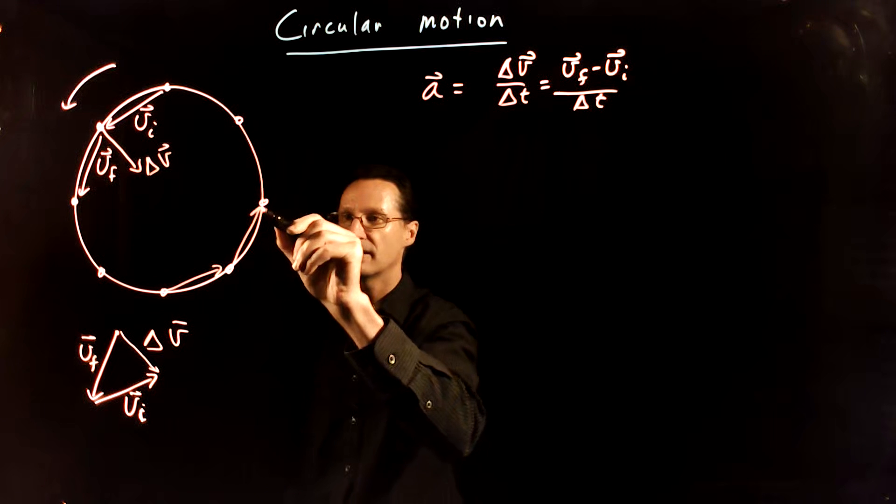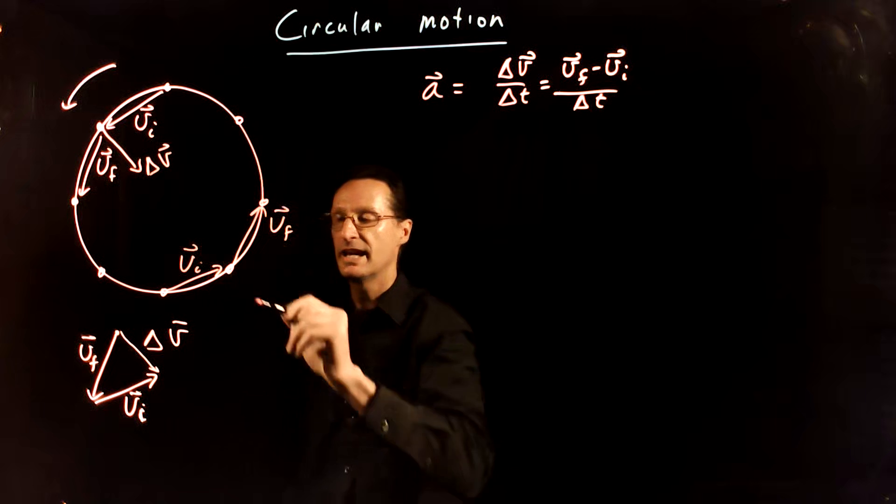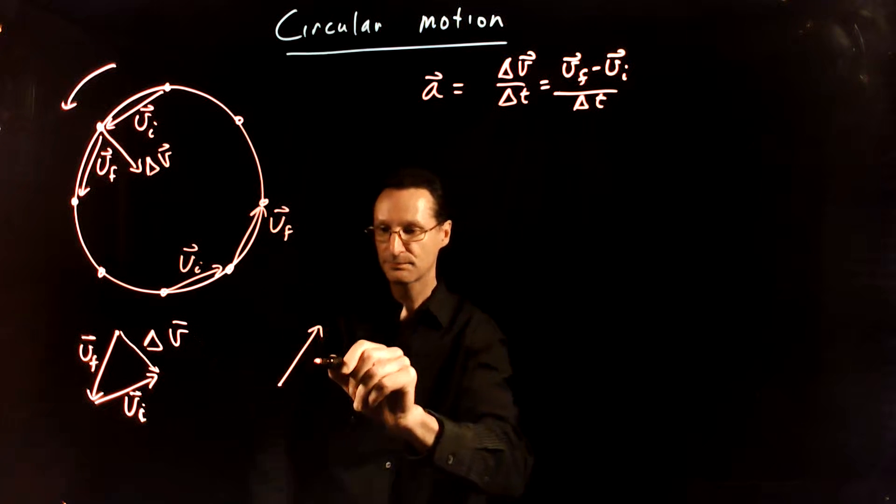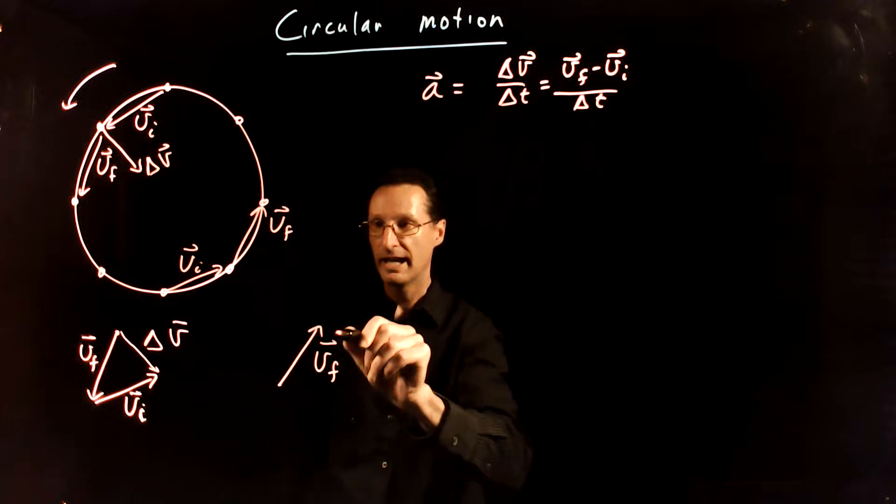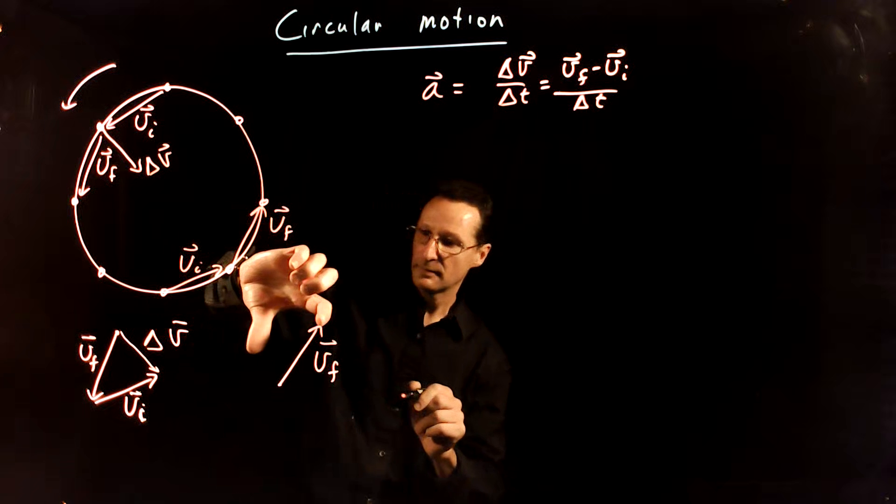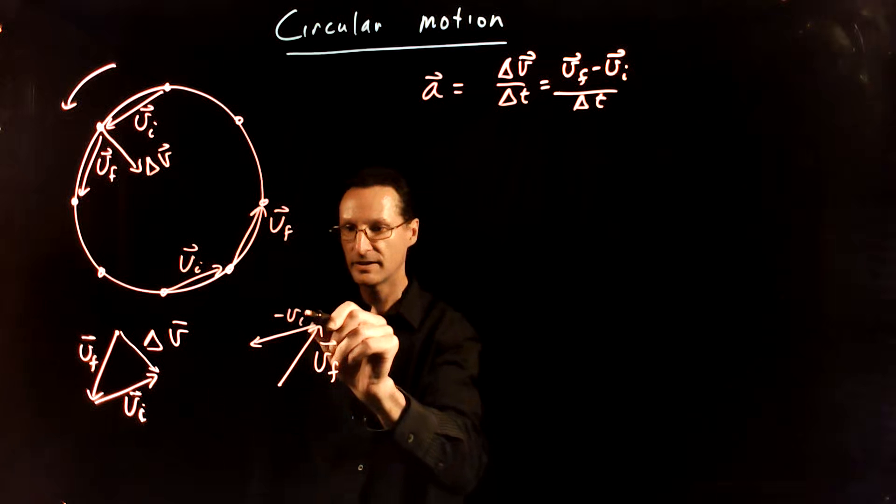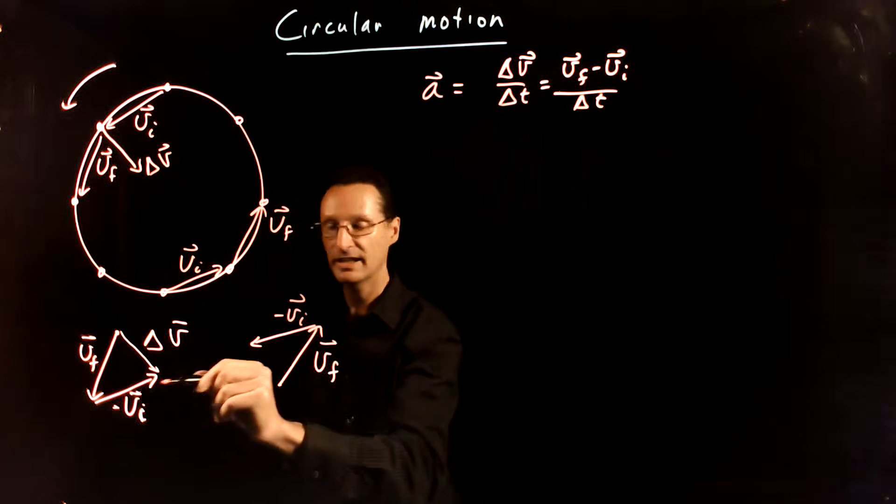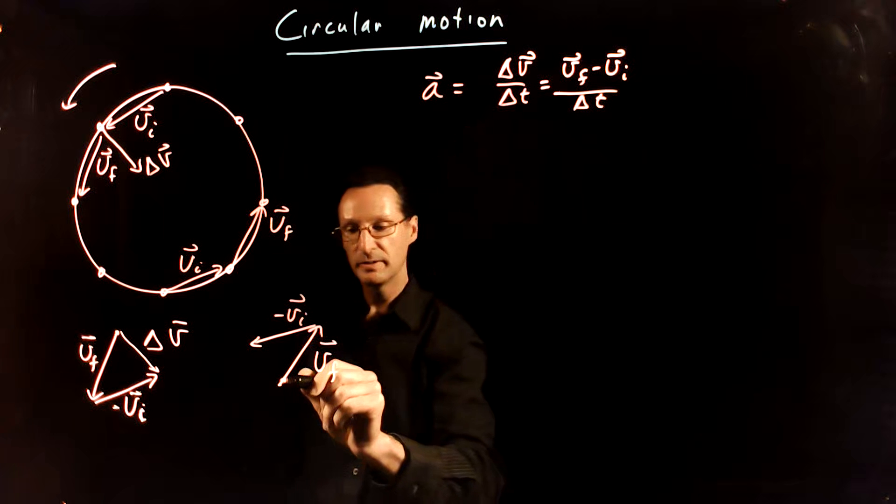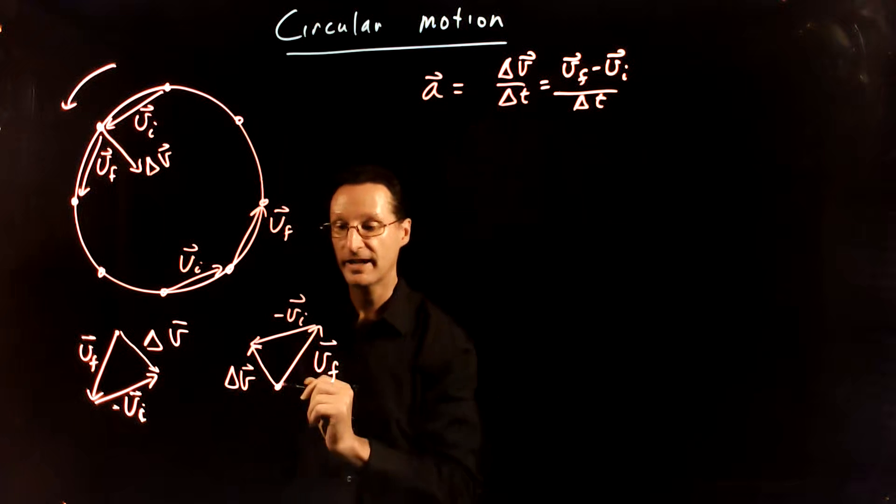So let's do it for this segment here. This is v final and this is v initial. And again, I want to take v final minus v initial. So let me take v final here. And I want to take v initial and flip it and then place it at the end of v final. So this is negative v initial. And delta v is going to be where I start to where I finish. So that is delta v, the vector.